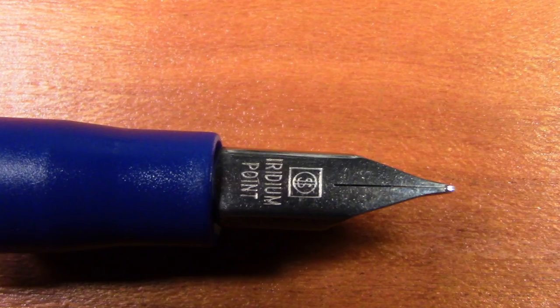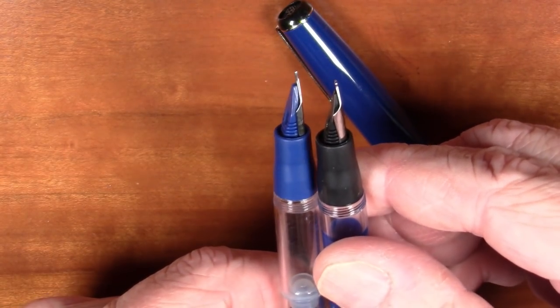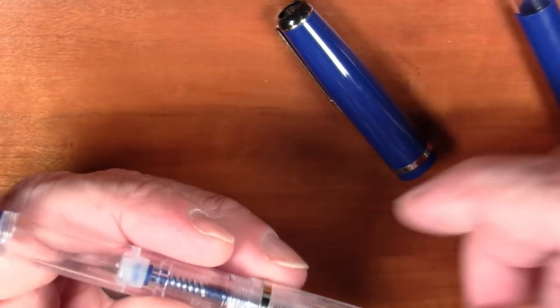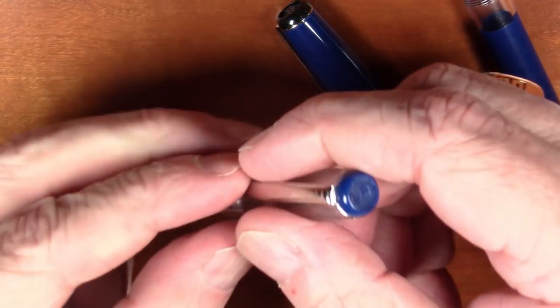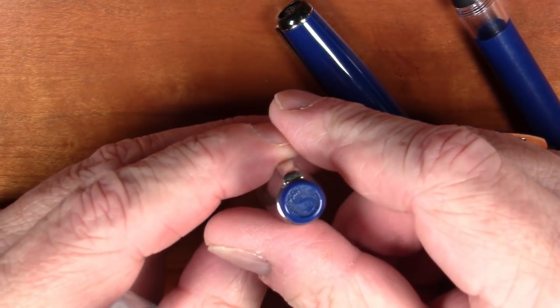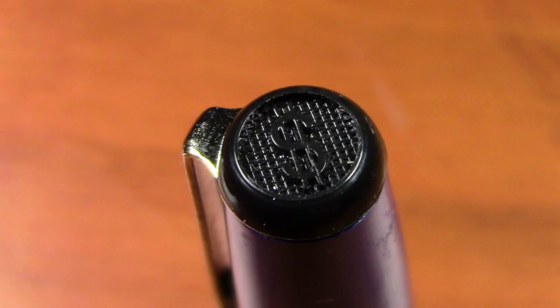And the demonstrator pens have what looks to be a finer, a fine point nib with the Dollar Pen logo, and it says Iridium Point. It's a totally different shape to the nib, as you can see. One thing I thought was cute: the back end of the caps on all these pens have the Dollar Pen logo, which is just a dollar sign, which I think looks kind of neat.